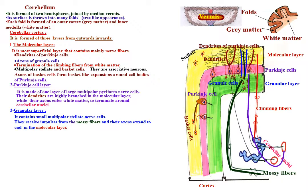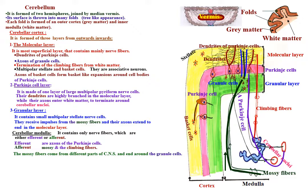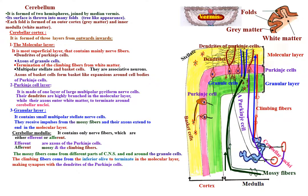The cerebellar medulla contains only nerve fibers, which are either efferent — the axons of Purkinje cells — or afferent, which are mossy fibers coming from different parts of the CNS and ending around the granule cells, or climbing fibers coming from the inferior olivary nucleus to terminate in the molecular layer, making synapses with the dendrites of the Purkinje cells.